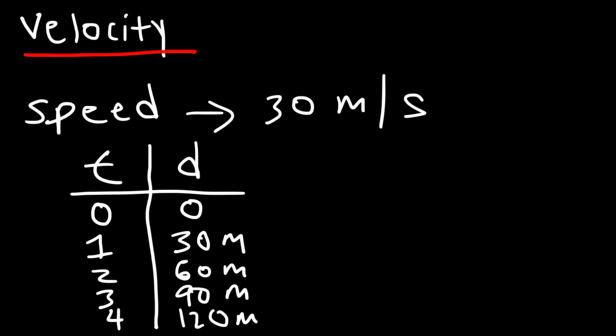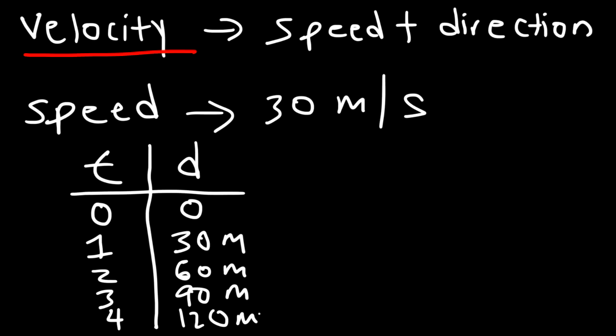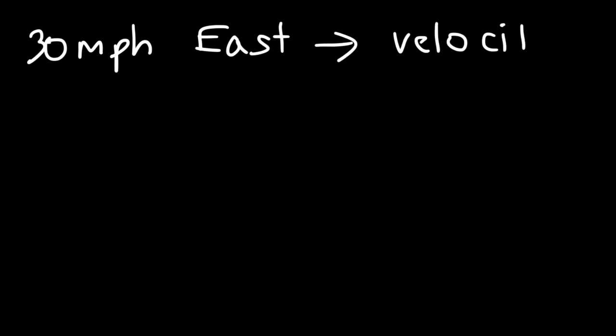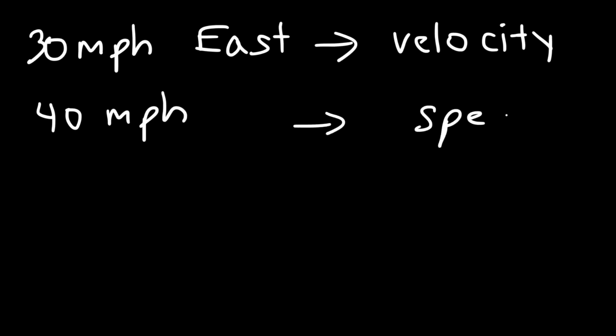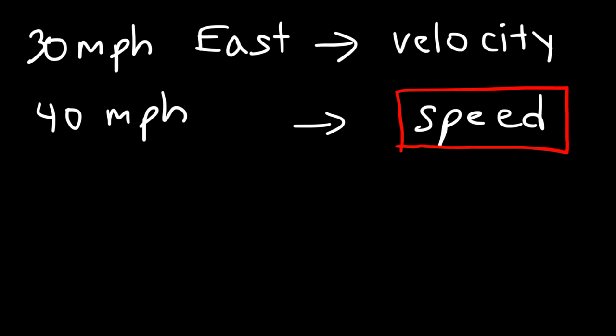Speed tells you how much the distance is changing every second. Velocity is basically speed with direction. If a car is traveling 30 miles per hour, all you know about it is its speed — you don't know where it's going, you don't know its direction. But if the car is traveling at 30 miles per hour east, that description is velocity because it gives you the speed and the direction. If I say a car is traveling at 40 miles per hour with no direction, that describes the speed. Speed tells you how fast the car is going; velocity tells you how fast and also where it's going.